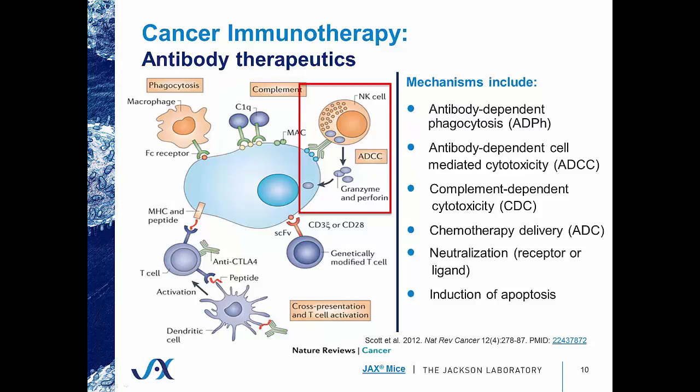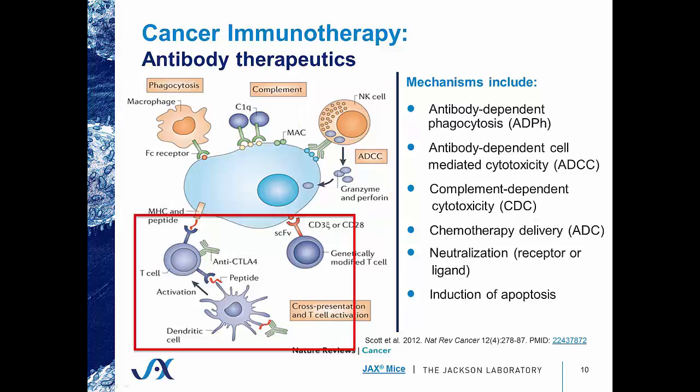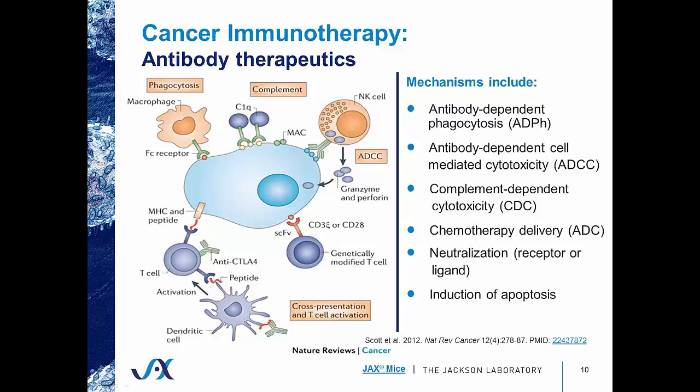There's also ADCC, or antibody-dependent cell-mediated cytotoxicity, in which a natural killer cell will bind to the Fc portion of that antibody and then subsequently release granzyme and perforin to cause apoptosis of that tumor cell. There's also cross-presentation and T cell activation, in which a dendritic cell will present that cancer cell antigen to a neighboring T cell, which will then mediate the appropriate response. Additional mechanisms include more targeted chemotherapy delivery through antibody-drug conjugates, where a chemotherapeutic drug is conjugated to a therapeutic antibody for fewer off-target effects, as well as neutralization of a receptor or ligand, and direct induction of apoptosis by the antibody.